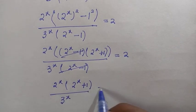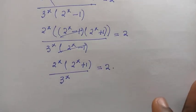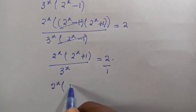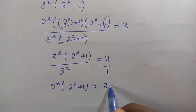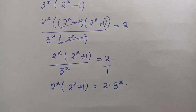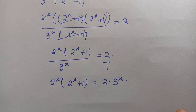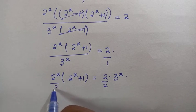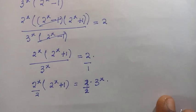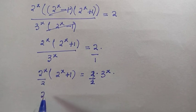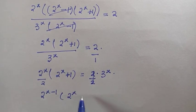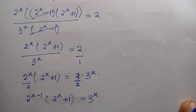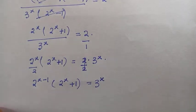After cancelling 2 raised to power x minus 1 from numerator and denominator, we have 2 raised to power x times bracket 2 raised to power x plus 1, divided by 3 raised to power x, equals 2. Cross multiplying, 2 raised to power x times bracket 2 raised to power x plus 1 equals 2 times 3 raised to power x. Dividing both sides by 2 and applying rules of indices gives: 2 raised to power x minus 1, times bracket 2 raised to power x plus 1, equals 3 raised to power x.